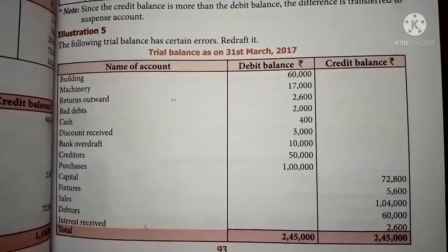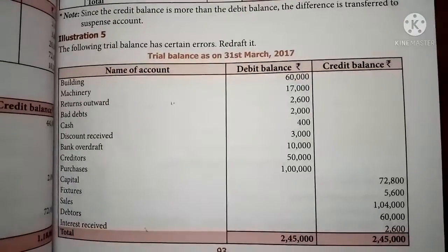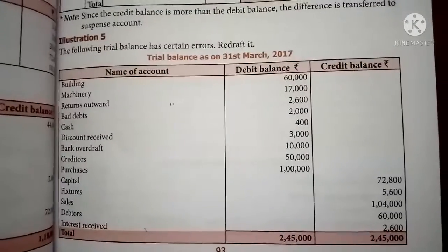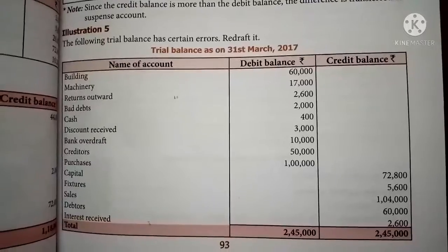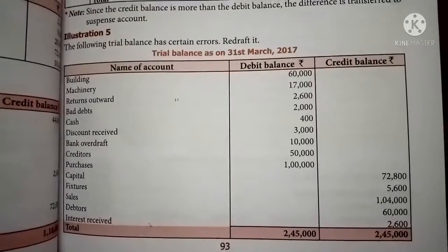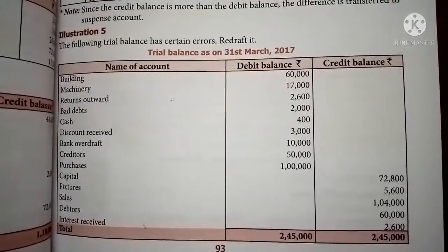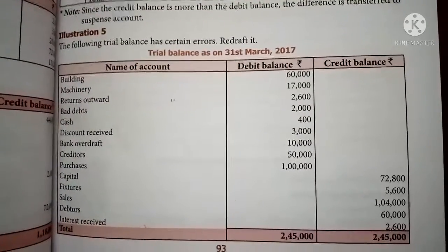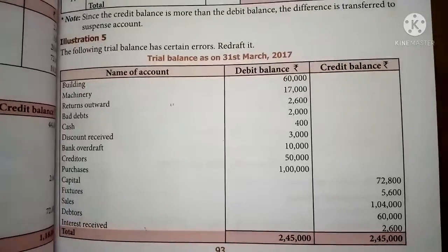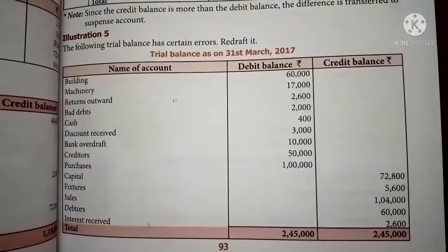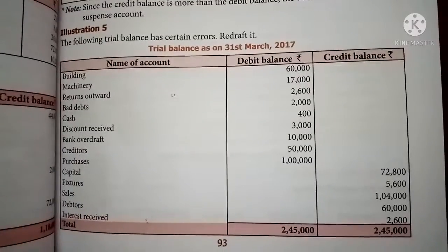Bank overdraft is one of the financial obligations — you can repay it, so it is a liability. It is written in the debit column, which is wrong. This 10,000 amount will be written in the credit column. Similarly, creditors — also a financial obligation and a liability — is written in the debit column, which is also wrong. So write the creditors amount of 50,000 in the credit column.